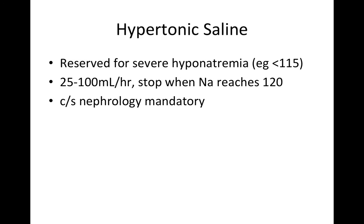Hypertonic saline is reserved for very severe hyponatremia and is almost never used otherwise. When used, it should be administered at 25 to 100 mL per hour, and stopped when sodium reaches 120 mEq/L, at which point you switch to a different fluid. Use of hypertonic saline almost always requires ICU-level care or nephrology consultation, because the correction can be so rapid it becomes dangerous.